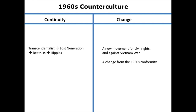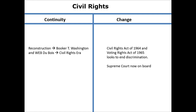The 1960s counterculture has a continuity — Transcendentalism from the 1830s, the lost generation of the 1920s, the beatniks of the 1950s, and the hippies. They're all counterculturalists, anti-materialism, non-conformists. The change: the hippies are more relevant to the Vietnam War, while the beatniks resist 1950s conformity. Civil rights: there's a continuity from Reconstruction to Booker T. Washington and W.E.B. Du Bois into the civil rights era, and there's change — laws actually pass, and the Supreme Court supports Brown vs. Board of Education, unlike Plessy vs. Ferguson.